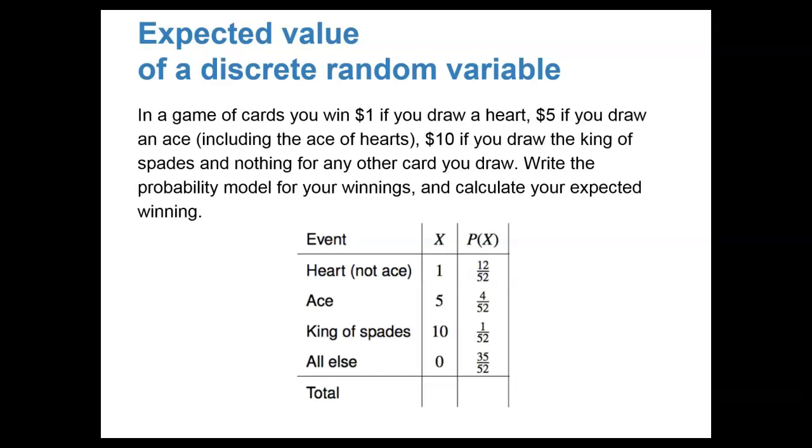The second column is our random variable, which represents, in this case, the amount of money that I win. So if I get a heart, I get $1. If I get an ace, I get $5. If I get the king of spades, I get $10. For all other cards, I get nothing.